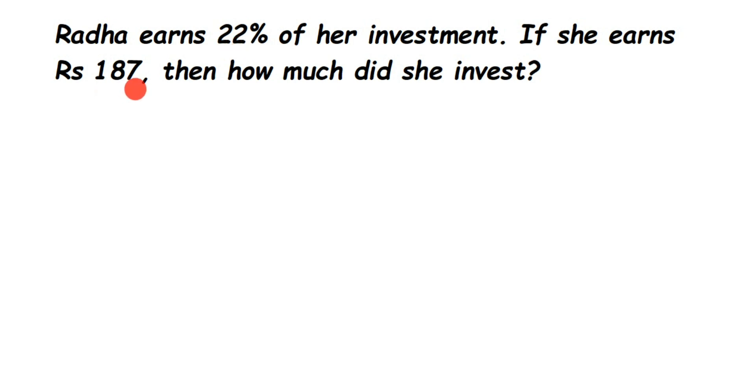If I frame it, it will look like 22 percentage of the investment is equal to rupees 187, and we don't know how much she has invested. That's what we have to find out here. So this investment, since it's unknown to us, we're going to assume a variable. Let us take the variable a. We're going to form an equation and then solve it. So 22 percent of a is equal to 187.